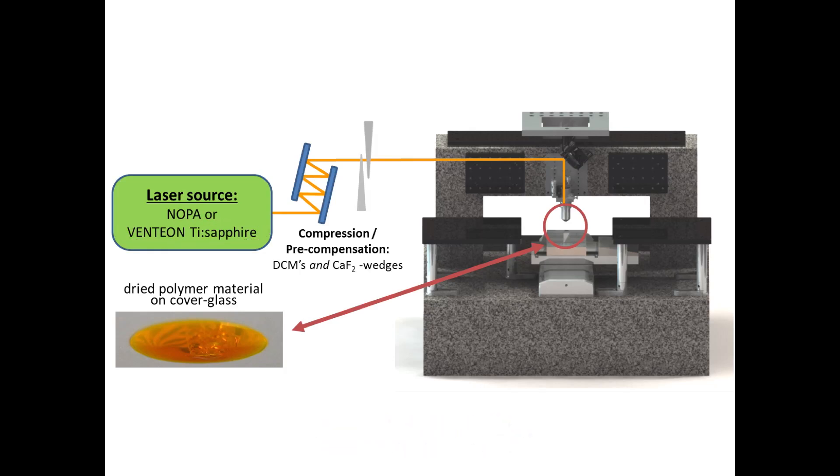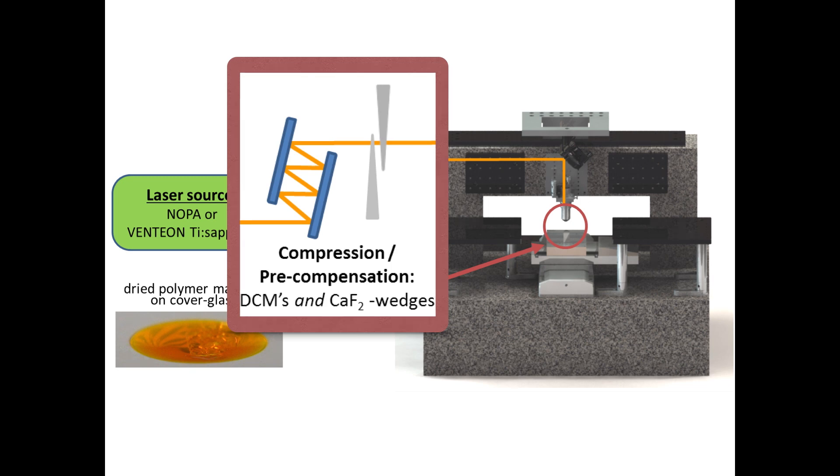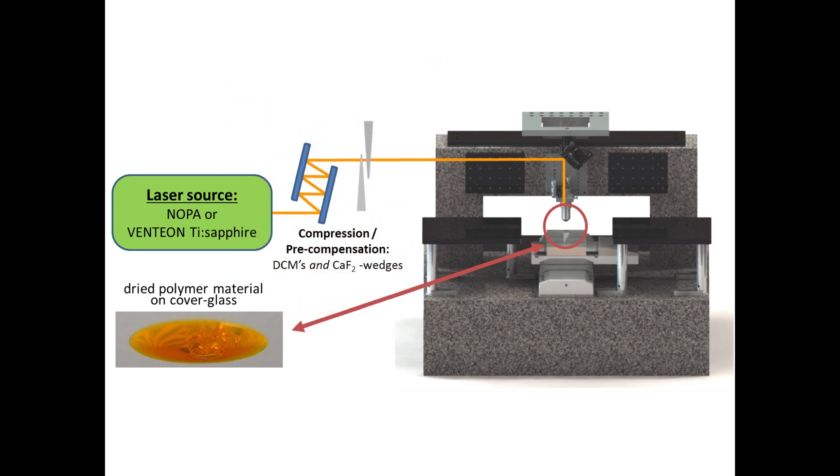The pulse chirp is precompensated by using dispersive double chirp mirrors and a calcium fluoride wedge pair. The focused laser beam transmits through the refractive index matching oil into the polymer disposed on the glass.